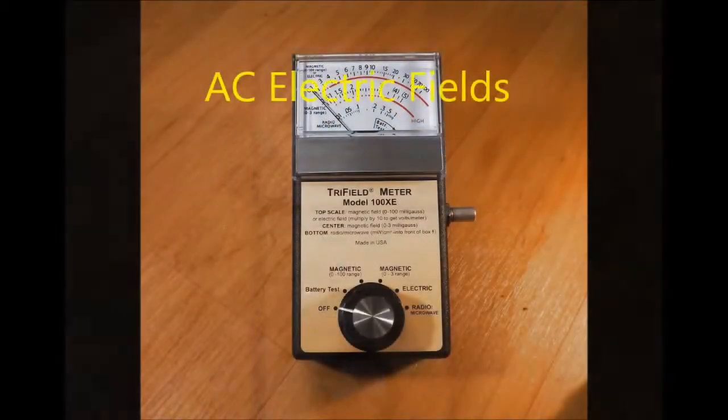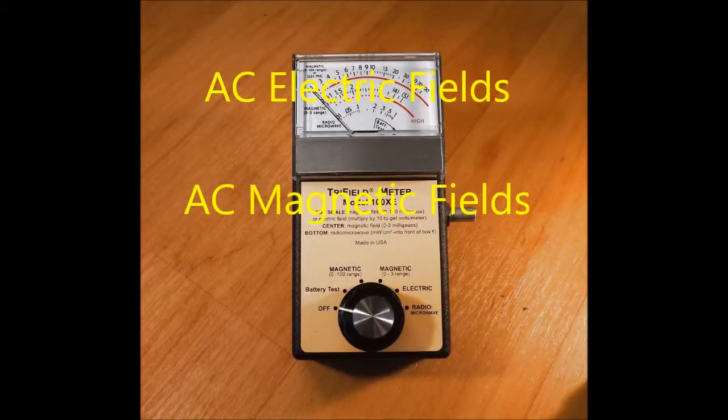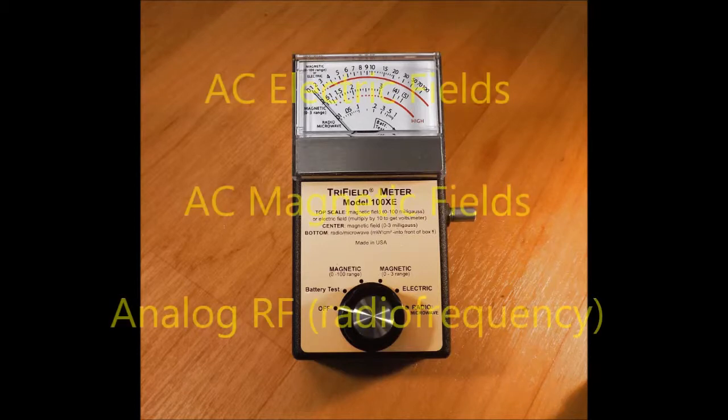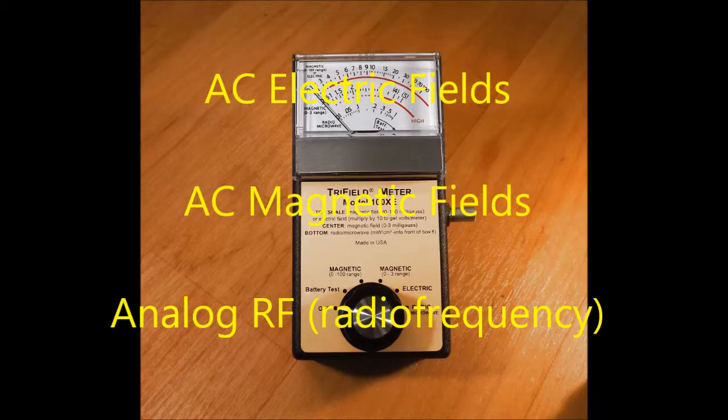This versatile meter will check for AC electric and magnetic fields from power lines, appliances, computers, and more, as well as checking for leakage from microwave ovens or other analog RF signals.